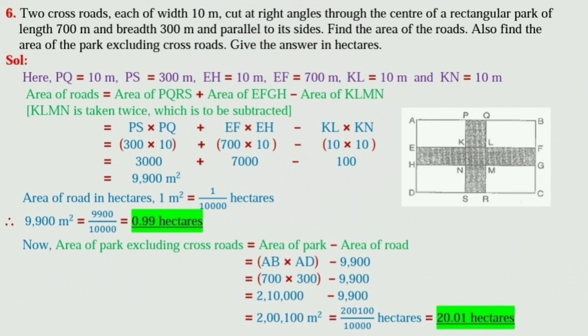Now, we have to convert into hectares. So, we have to divide it by 10,000. Therefore, 200,100 upon 10,000 is equal to 20.01 hectares.